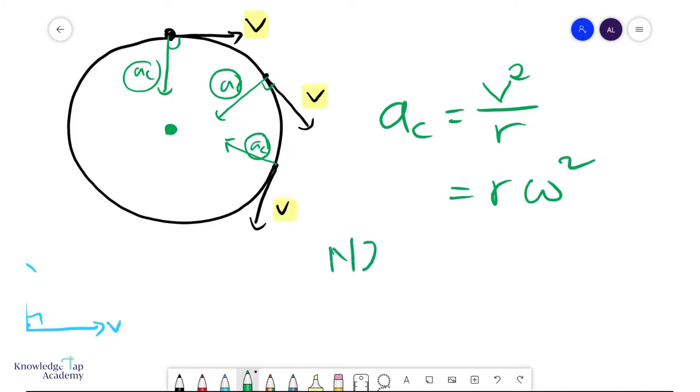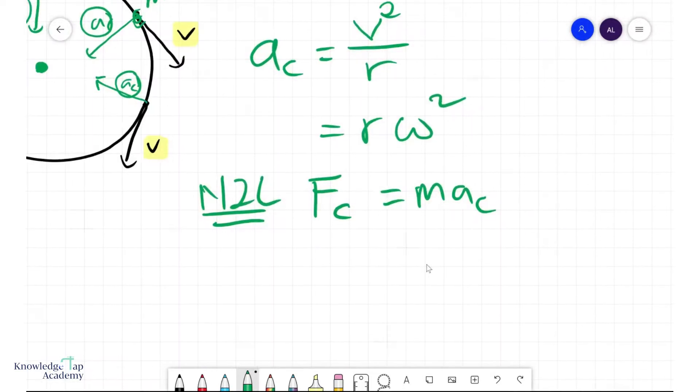So by Newton's second law, there is something called the centripetal force, which is of course m times AC, where mass m is the mass of the object that is in circular motion. And of course that means that your centripetal force can be written as m v squared over r, or indeed m r omega squared.